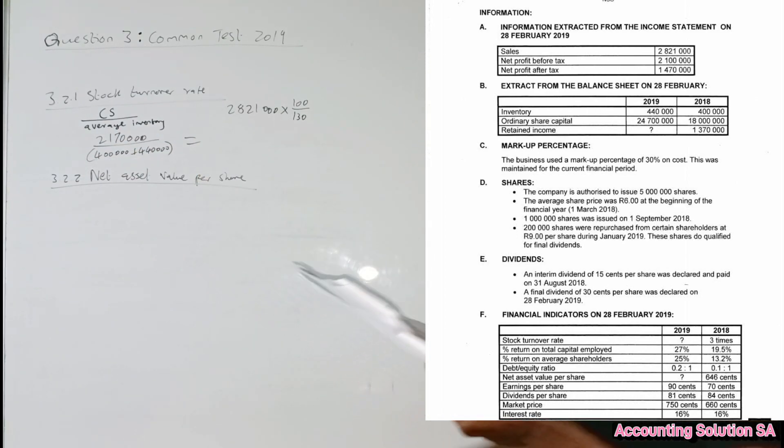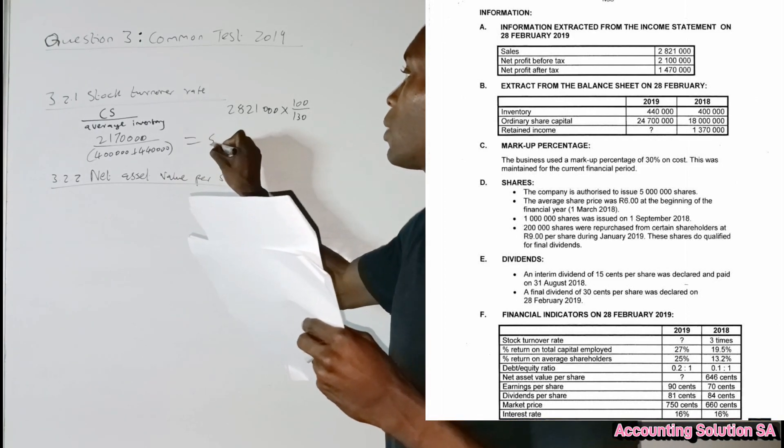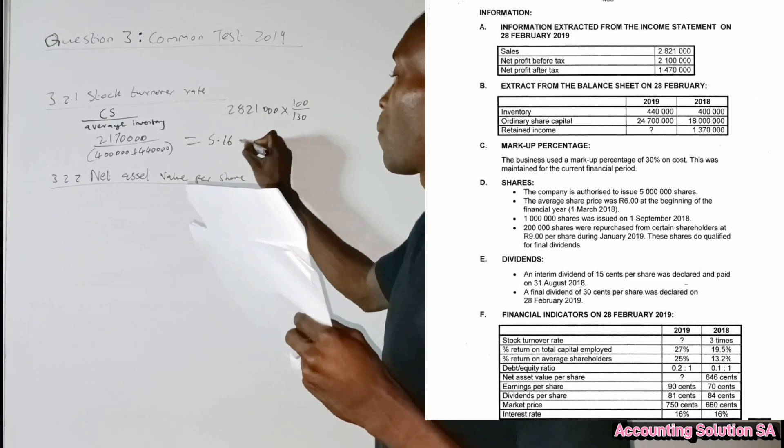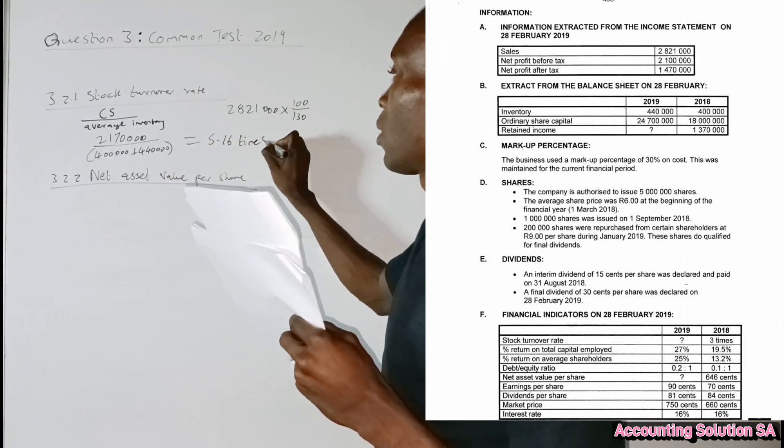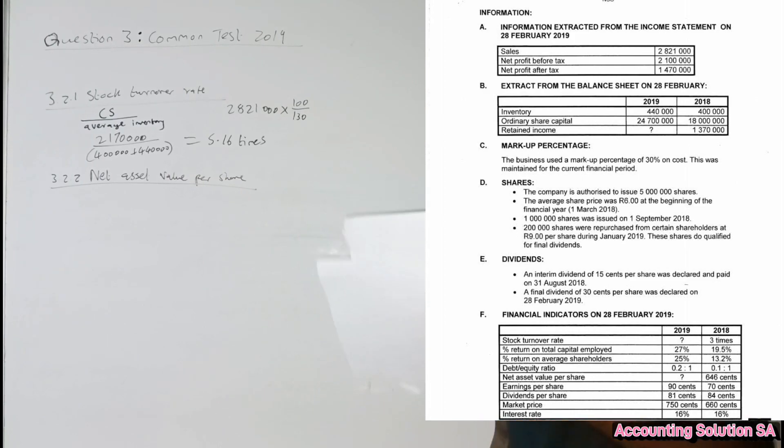Which means that our average for this one is 420. Then you say 2 million 170 divided by 420 and it's gonna give you an amount of 5.16 times, which means that inventory was purchased and sold 5.16 times. They didn't say anything about commenting, let's ignore that part.